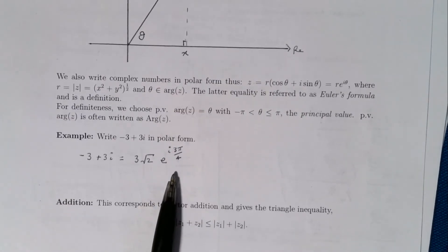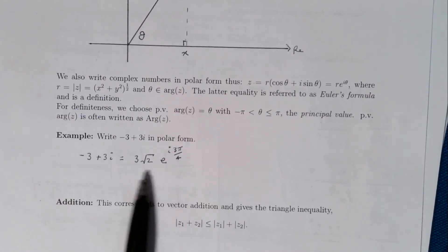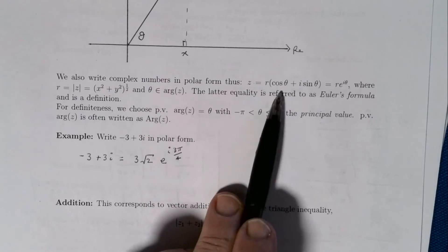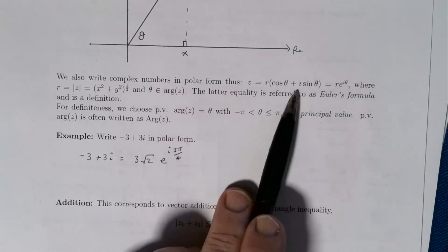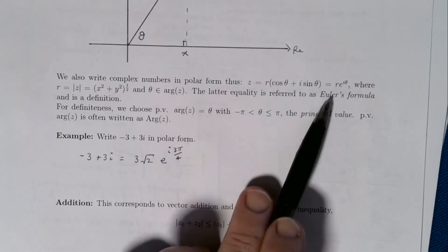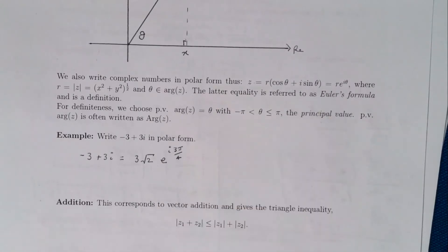The form with cos θ + i sin θ is what I tend to think of as an intermediary form between the Cartesian form and the proper polar form written with e^(iθ).